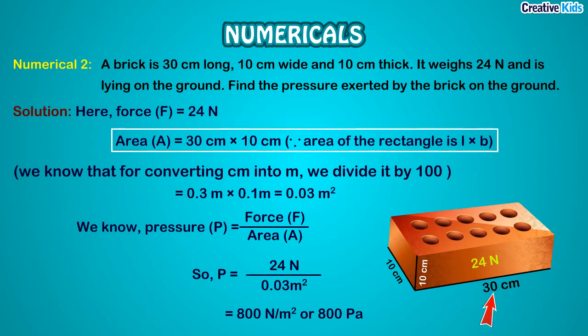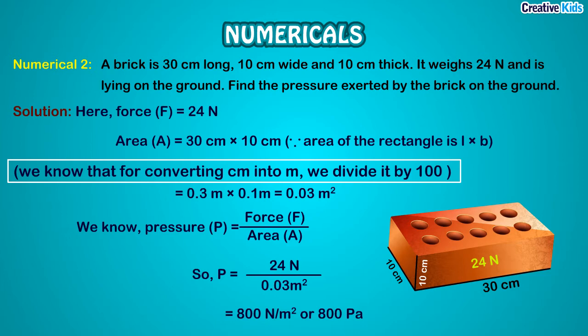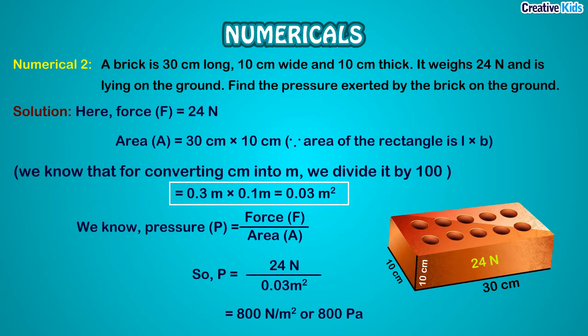The area of contact is 30 cm × 10 cm. We must convert to meters by dividing by 100, since 1 meter = 100 cm. So 30 cm = 0.3 m and 10 cm = 0.1 m. The area of the brick is 0.3 m × 0.1 m = 0.03 m².